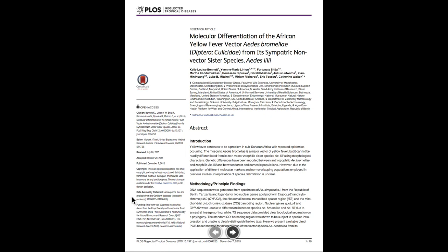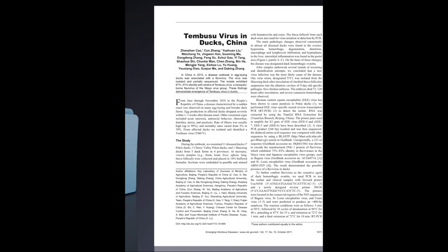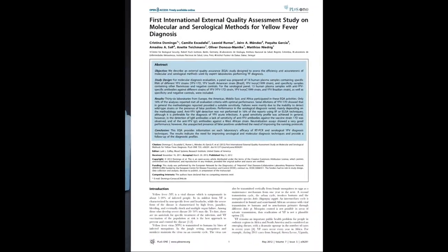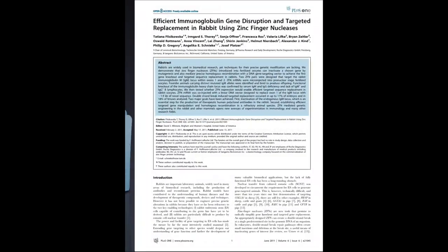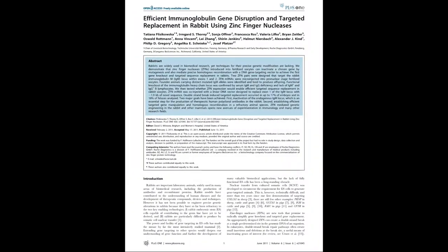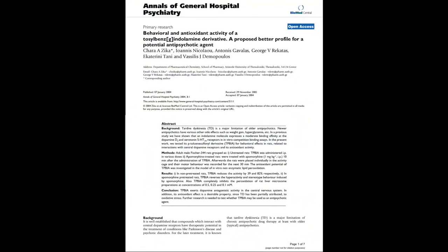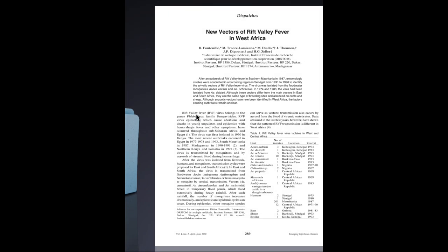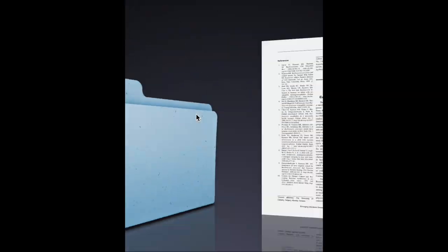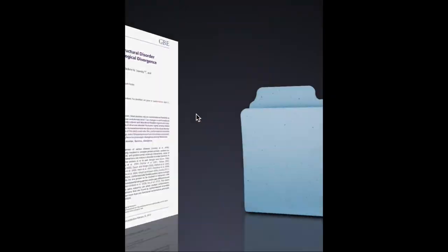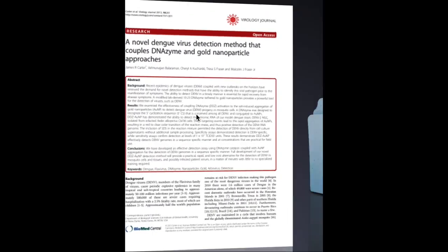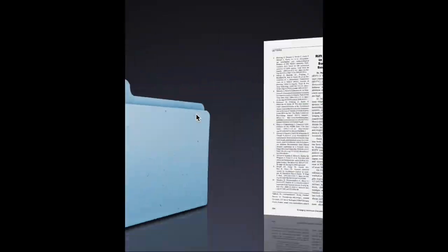Now we'll skim through the papers we've downloaded and see which of them are about viruses. This one is, so is that one, so is this one and this one. No, that one's about rabbits — there's a type of rabbit called Zika. This one's actually by somebody called Zika, so another false positive. But there aren't many false positives. Virus, virus, virus — lots of them. So we're doing very well.